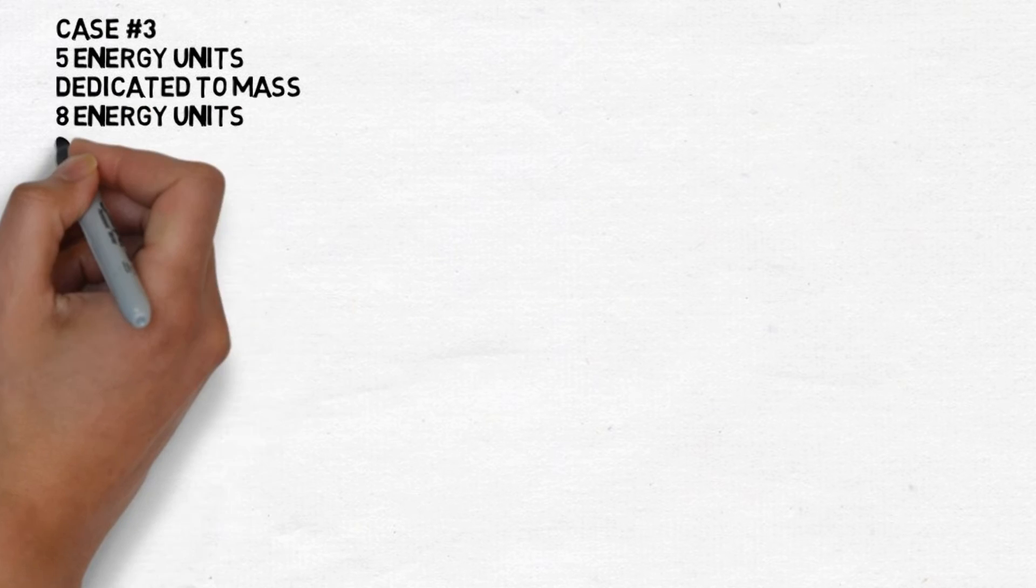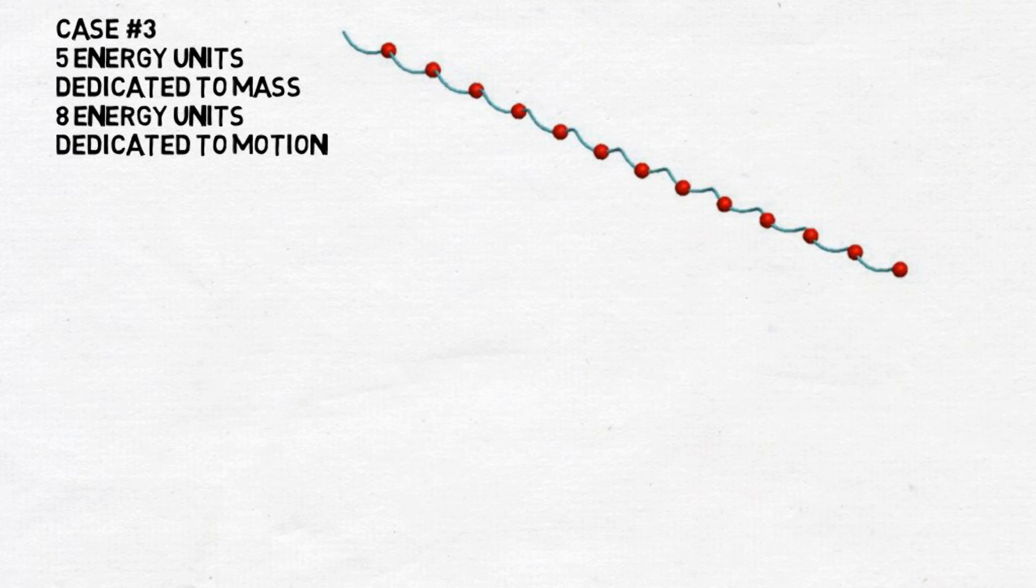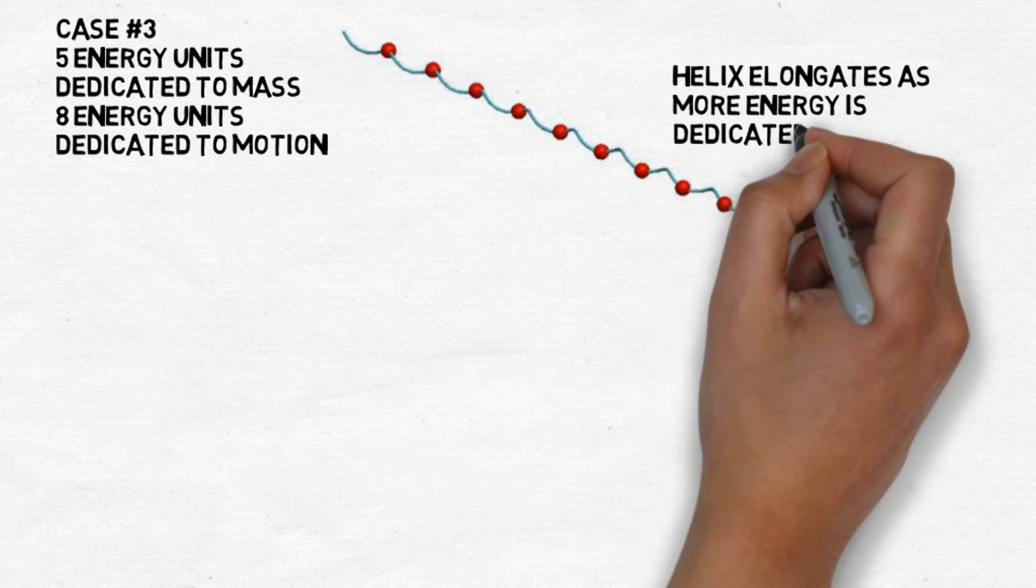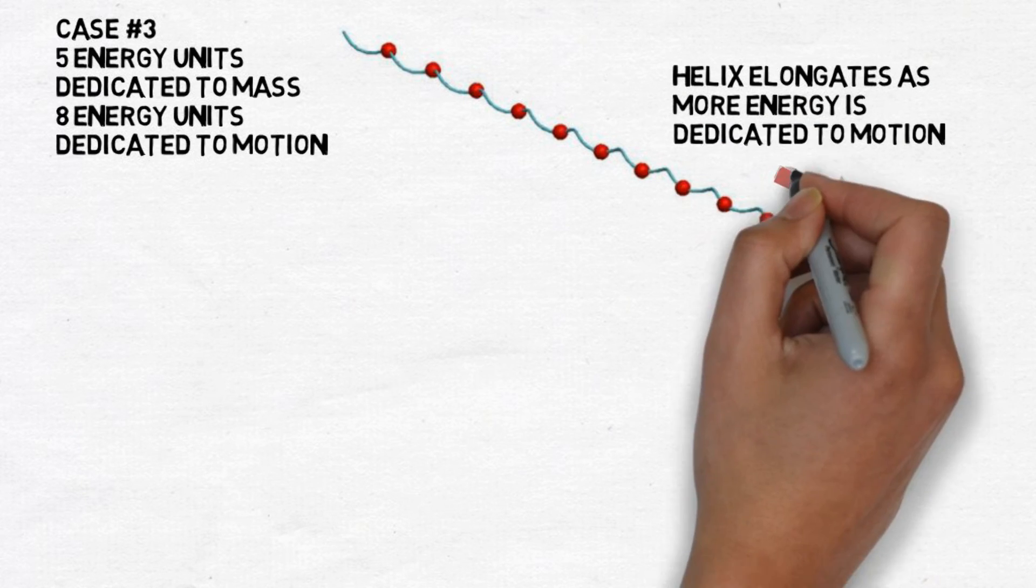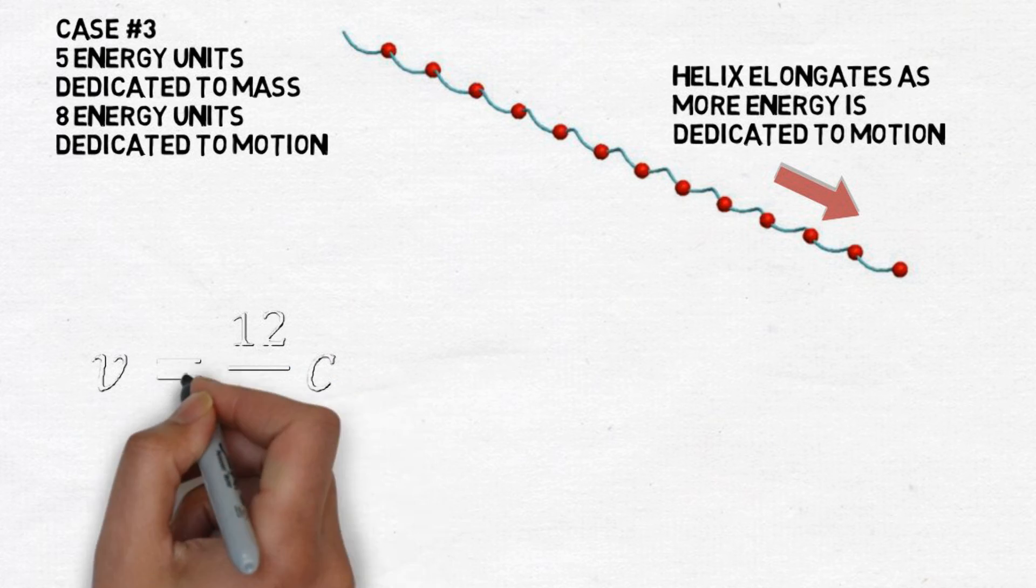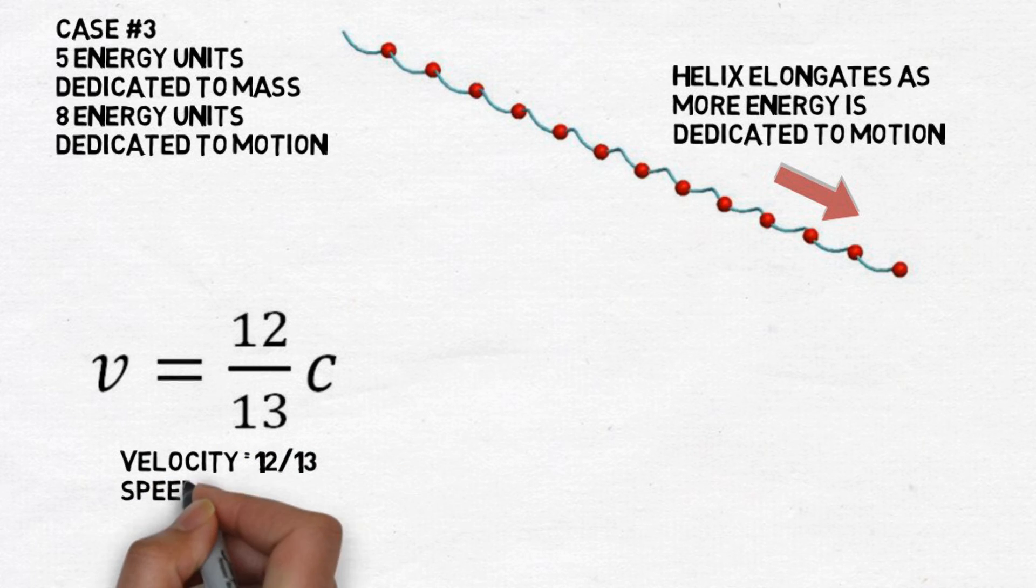In case 3, we dedicate 5 energy units to mass and 8 energy units to motion. Adding more energy to motion elongates our helix, and our velocity increases to 12 thirteenths the speed of light. It's interesting to note that small increases in nv, or the energy dedicated to motion, has a much larger impact on leg b and the resulting velocity.